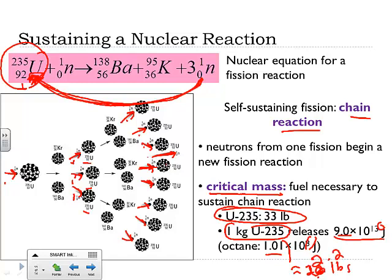Critical mass is something that sustains a nuclear reaction but probably we don't want in our power plants. Power plants are designed to get just enough neutrons to keep the reaction going but not to reach critical mass.